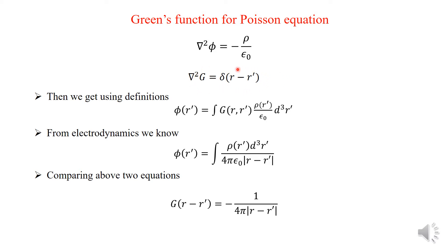That is the interesting property of a delta function — we can make use of a proper function as a delta function, as I explained in my class about the Dirac delta function. Once you are able to construct the Green Function, then you can easily solve your problem. Here we will see why I have taken the Poisson equation — it is a well-known problem.